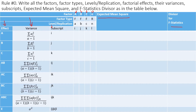For a fixed effect there is not really a variance in the traditional sense — it's the square of alpha, a quadratic term of the effect alpha-i. This is how the variance for a fixed effect is written. Check my earlier videos for how these terms are derived.